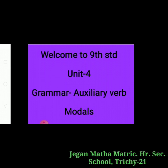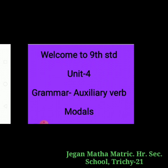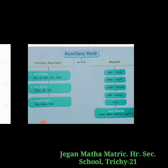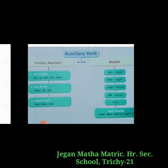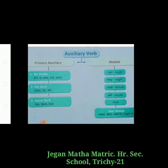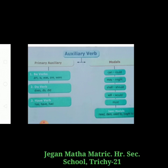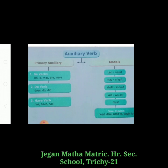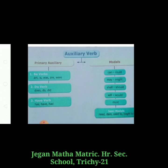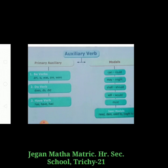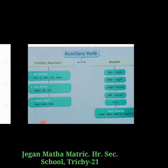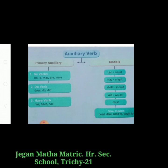The third primary auxiliary is the have verb. Have verbs are: has, have, and had.